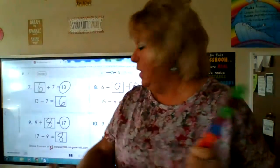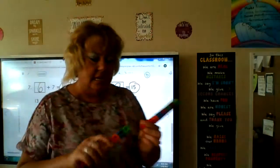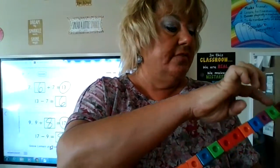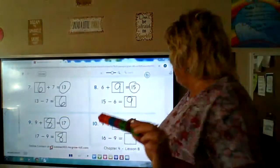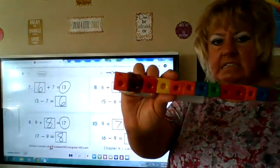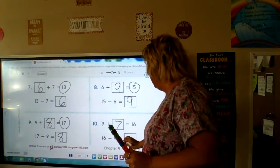9 plus what is 16? We have a missing addend. Start with 16: 6, 7, 8, 9, 10, 11, 12, 13, 14, 15, 16. Take away 9 — the parts of 16 are 9 and 7. 9 plus 7 is 16, 16 minus 9 is 7, 16 minus 7 is 9. So the parts of 16 are 9 and 7, and 16 minus 9 is 7.